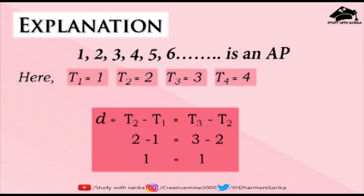To prove this is an AP, I have taken 4 numbers: T1 is 1, T2 is 2, T3 is 3, T4 is 4. Now T2 minus T1 is 2 minus 1, which is 1. And T3 minus T2 is 3 minus 2, which is also 1. So I get the same constant value of 1. This is the common difference. Since there is a common difference, this is definitely an AP — because 2 minus 1 is 1, 3 minus 2 is 1, 4 minus 3 is 1, 5 minus 4 is 1.